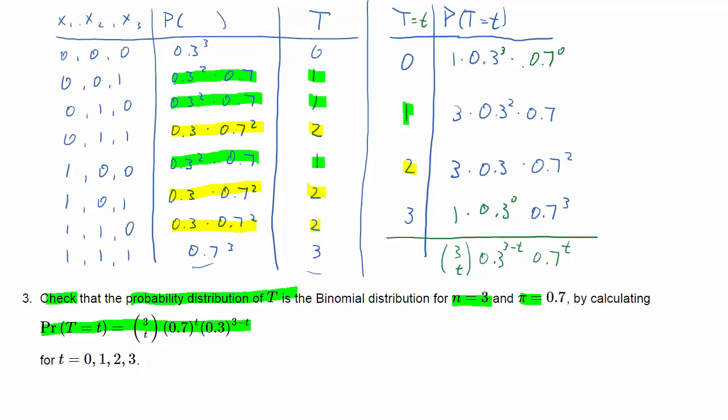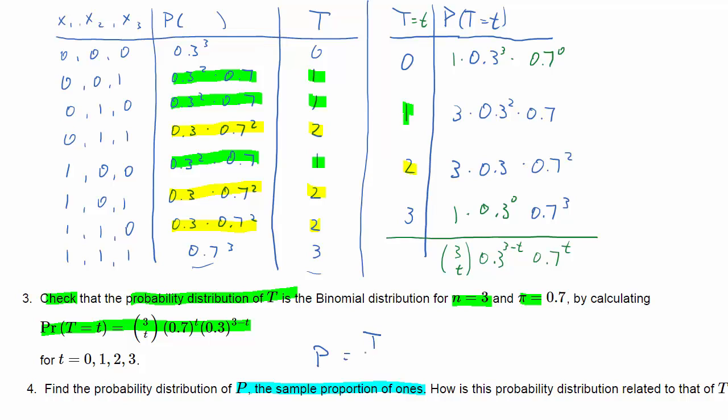That is, of course, exactly what we were after, the binomial distribution. So even if you didn't know what the binomial distribution was beforehand, you actually derived one. So now we're supposed to find the probability distribution of P, the sample proportion of 1s.